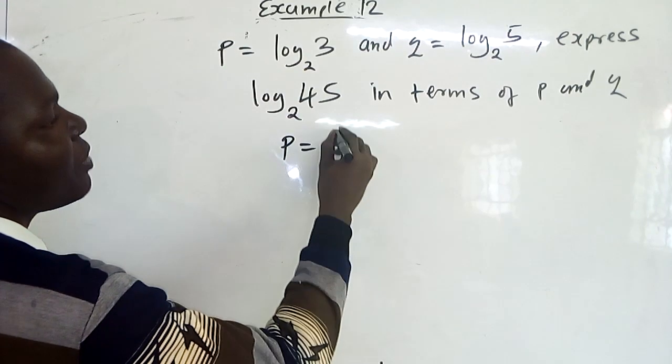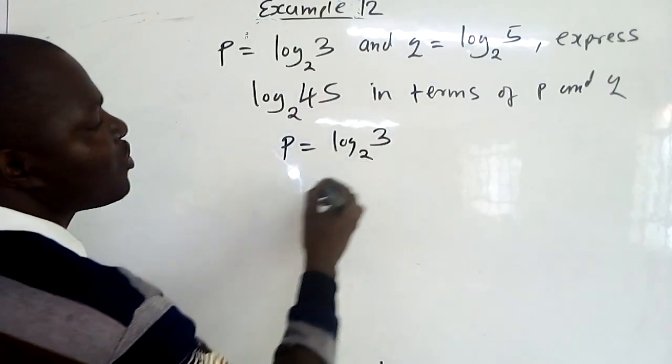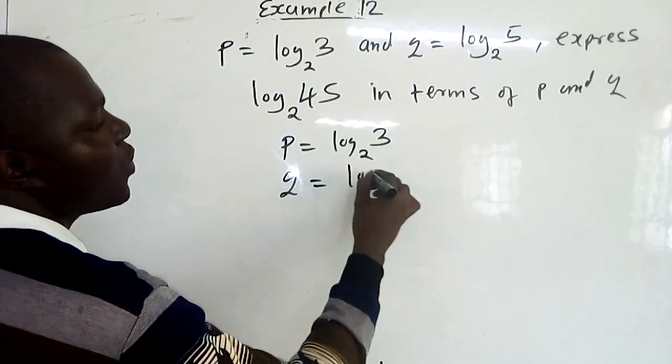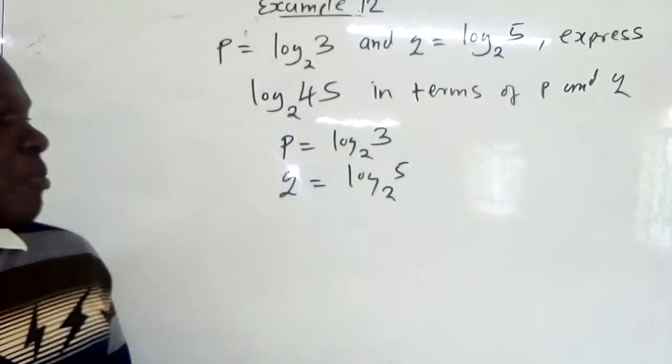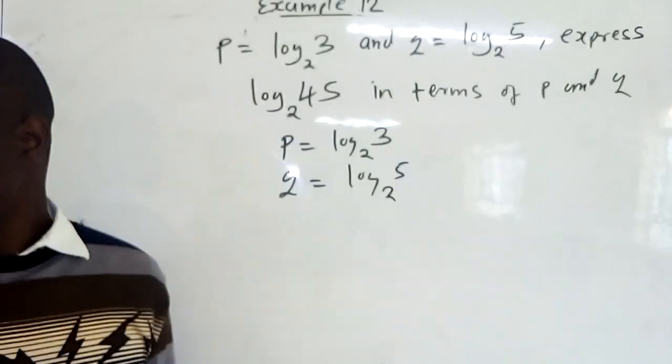So first of all, we have P is log 3 to base 2 and we have Q is log 5 to base 2. Meaning, this 45 must be expressed in terms of 3 and 5 only.